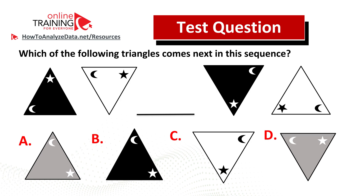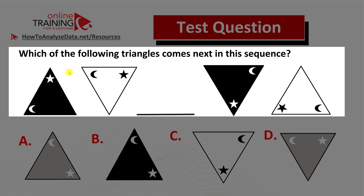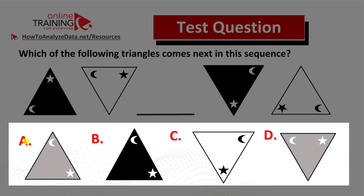I have a tricky question for you, which you might frequently see on the test. You might be able to solve it, or in case you don't, I would love to show you the solution. Which of the following triangles comes next in the sequence? You have a sequence of five triangles, one triangle in the middle is missing, and you have four different choices to pick the right triangle.